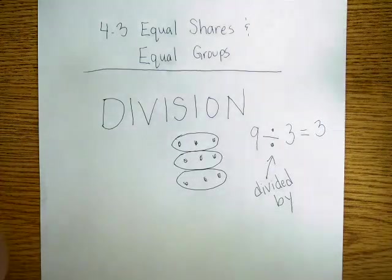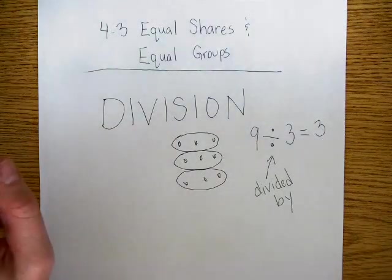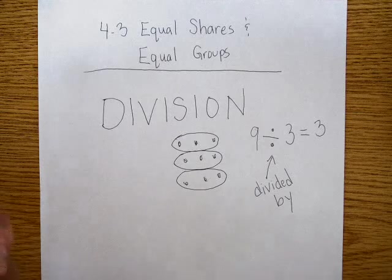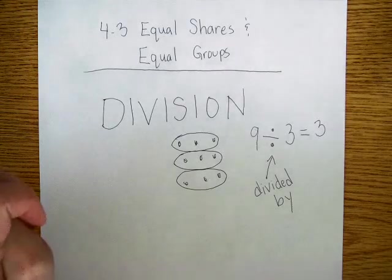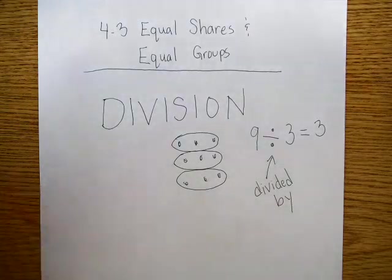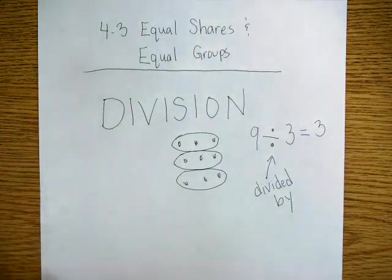You could take, say, 25 pennies and tell the kids, okay, I want you to split these pennies into 5 groups. Or I want you to divide these pennies up so there are 5 in each group. So change works really well with that.